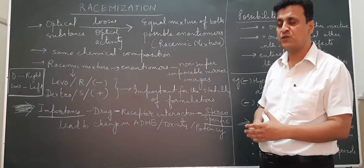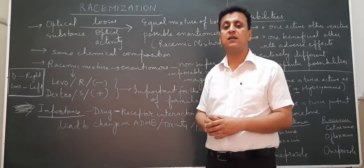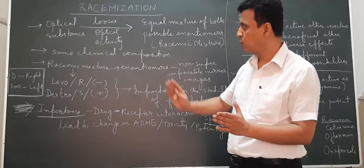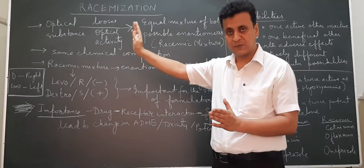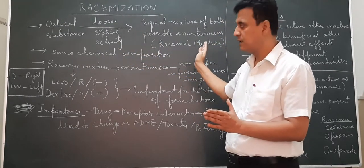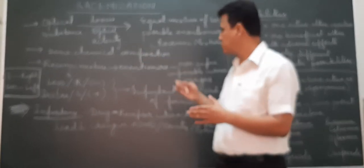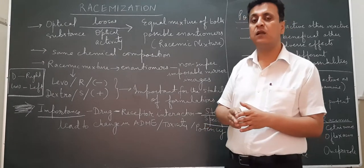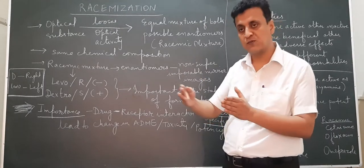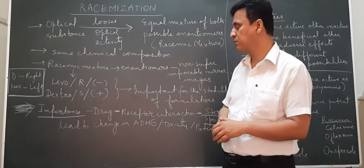In this transformation, the chemical composition of the optical substance does not change. The optically active substance converts to an inactive substance. The optical activity is lost and a mixture with equal amounts of enantiomers is formed. This process is called racemization and the mixture is called a racemic mixture.